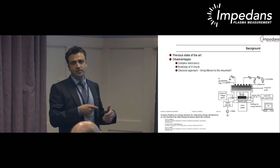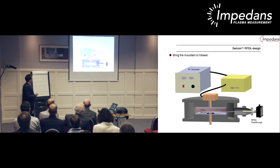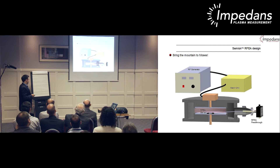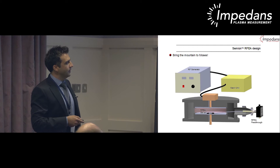Mike Hopkins had the idea: instead of bringing Moses to the mountain, bring the mountain to Moses. So bring the RF bias to a place where it can be handled safely, making it more suitable for implementation in a wide range of plasma reactors. The sensor is placed on the RF biased electrode, the RF bias is taken to a place where it can be filtered and handled safely, and signals are collected and supplied to the analyzer in a more convenient way.